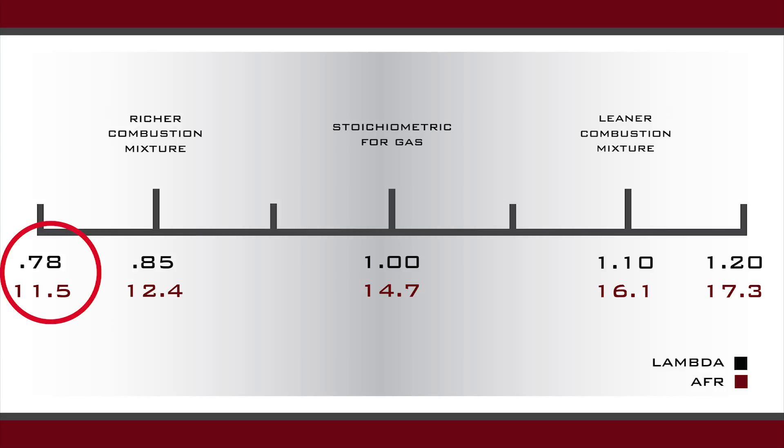Now you have a reference point for where all the ideal combustion ranges are for idle, part throttle, and wide open throttle.